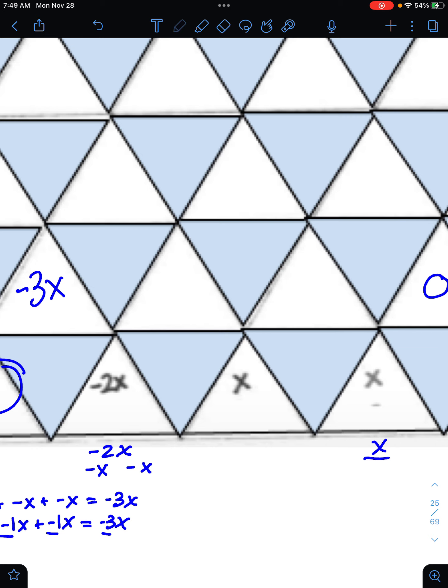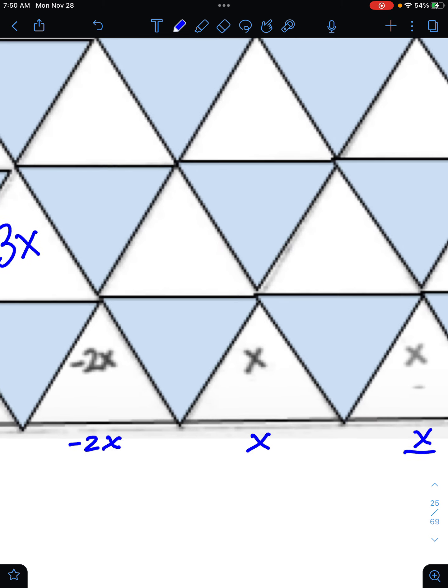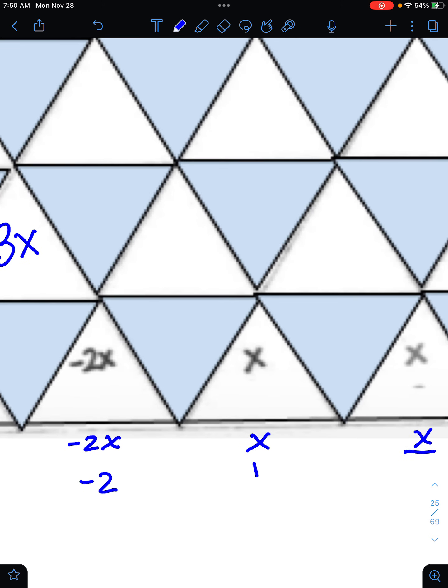So the next one is going to be negative 2x and positive x. That's like having a negative 2 and a positive 1 that I'm combining. Negative 2 combined with positive 1 is going to leave me with negative 1. I could also think about that as negative 2x is equal to negative x and another negative x. Positive x is equal to just positive x. So these guys will cancel out and I'll have one negative guy remaining.